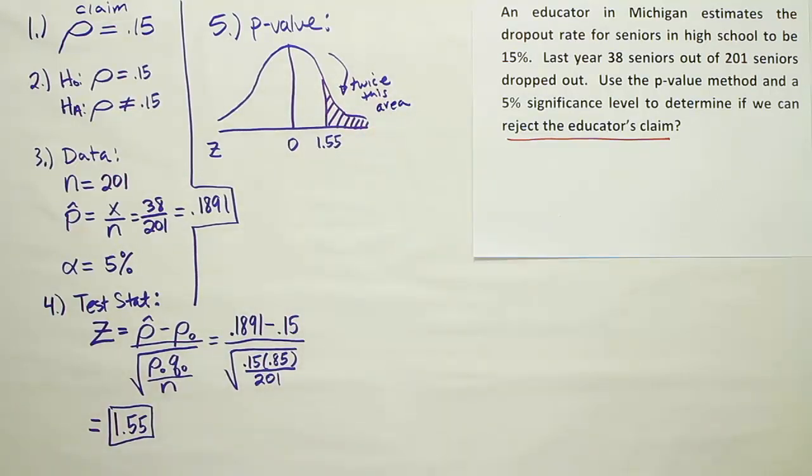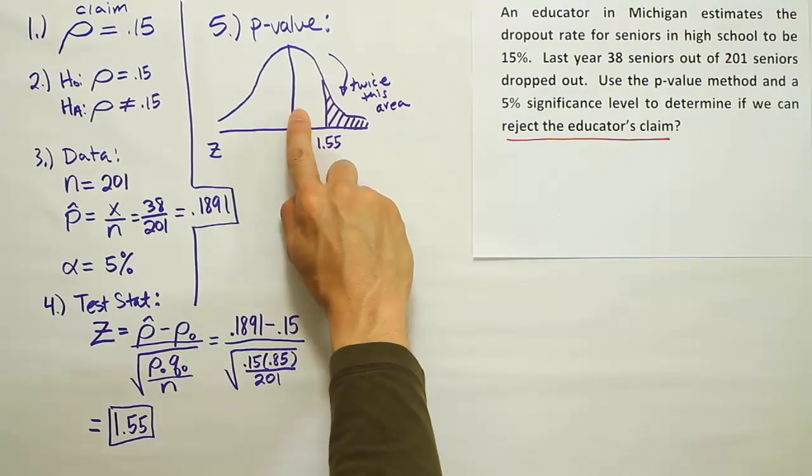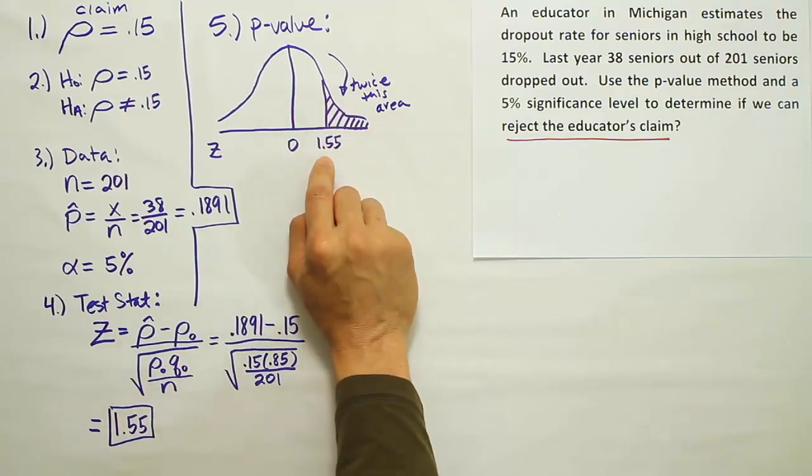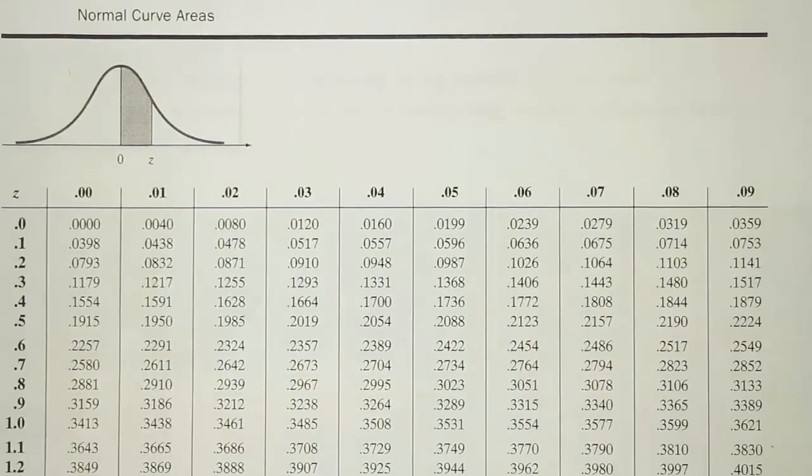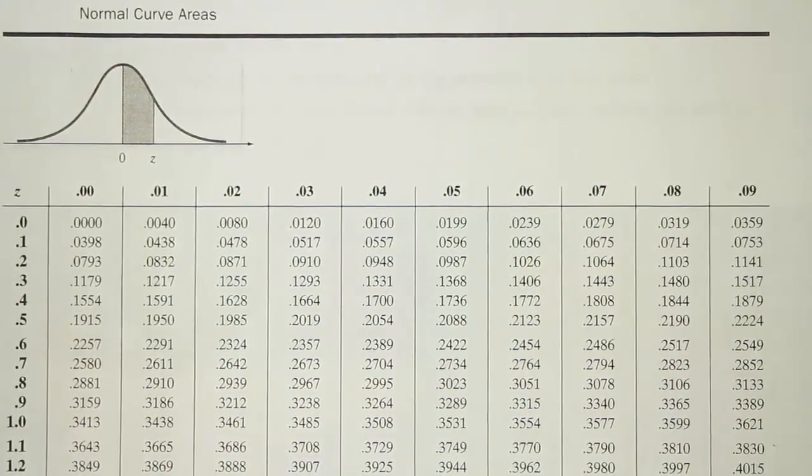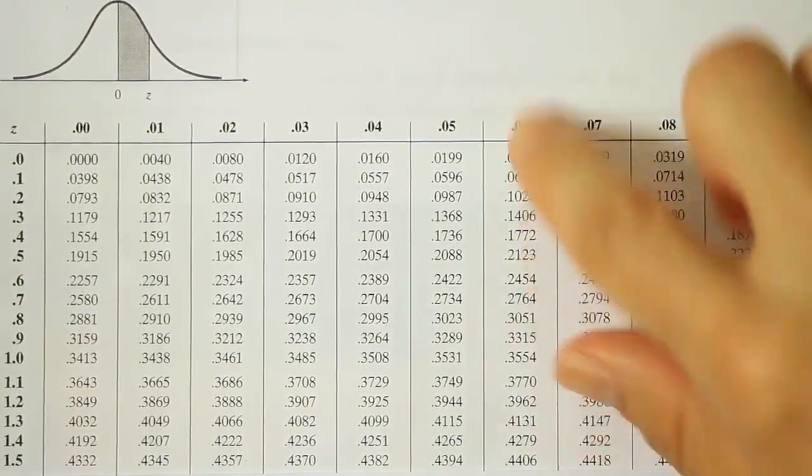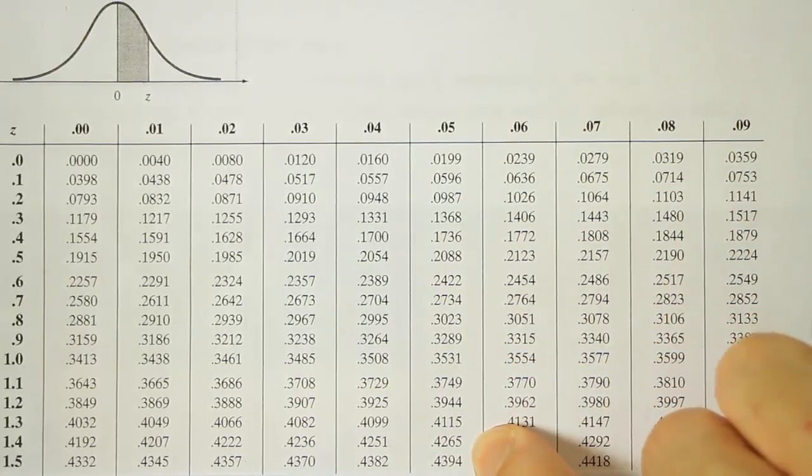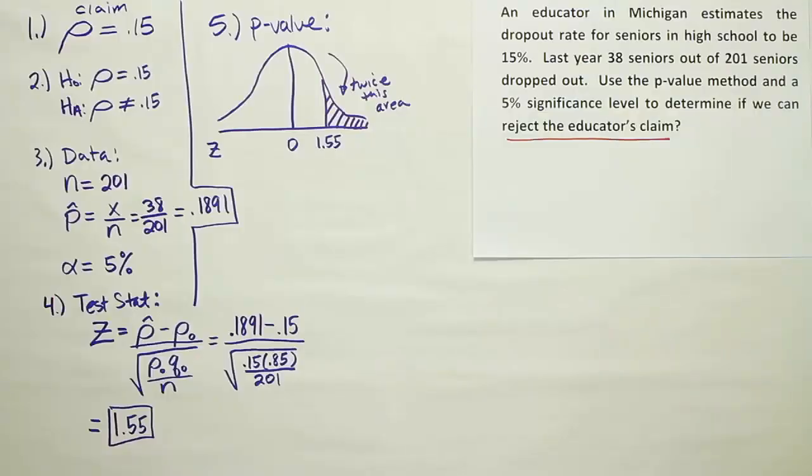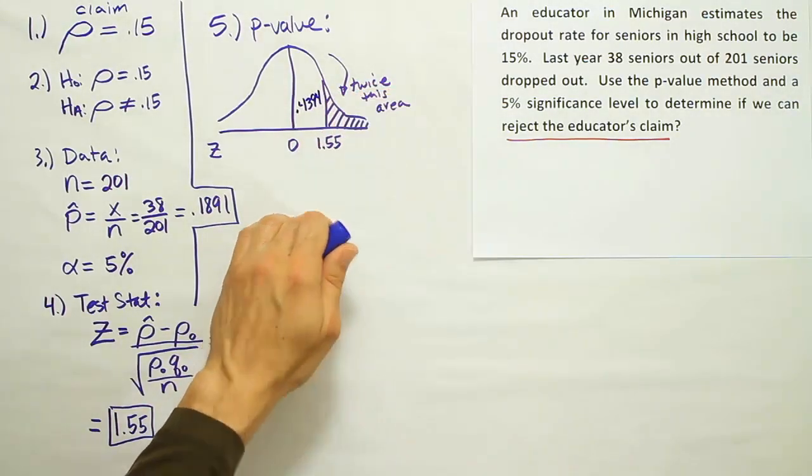So I have to figure out what that area is. So the first step is going to be to look up 1.55 on my z-table to get my area from here to here. And from there I'll be able to calculate this tail area. So let's go look up 1.55 on the z-table. Okay, so we're looking at 1.55 on our z-table. Let's scroll until we see the 1.5 row. There it is. And coming over to the 5 column, we see that the answer is 0.4394.